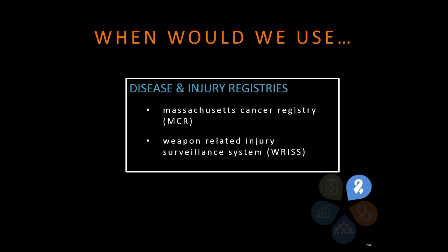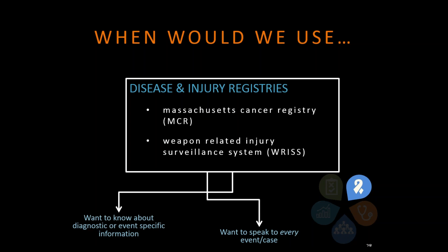Disease and injury registries: as we described in part one, these are data sets that include every single person who fits a certain disease category or event type. The mass cancer registry includes everyone who's reported as having been diagnosed with cancer. The weapons related injury surveillance system includes every reported weapons related injury in Massachusetts. That gives you a data set you can use when you want to speak to every event or case that's reported — it's not a sample like the health surveys. If you're writing a grant about a very specific subpopulation, you can literally make the argument that in Massachusetts, this is definitely the need because these are literally all the people who have cancer that we're talking about in the registry data.